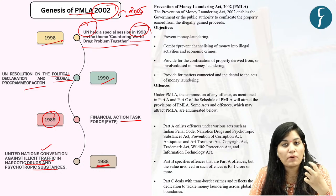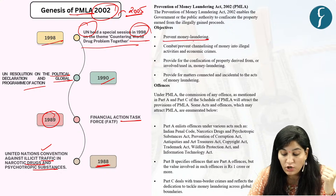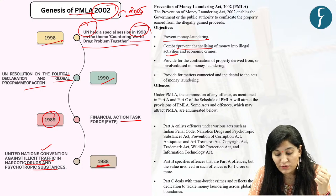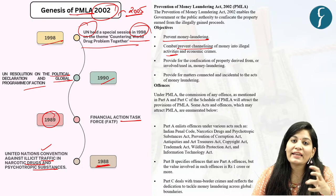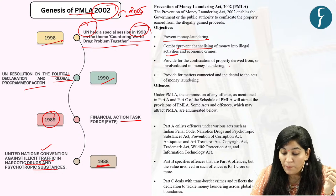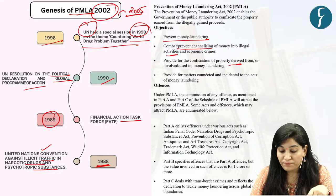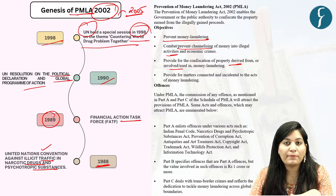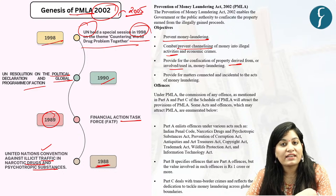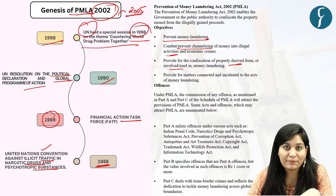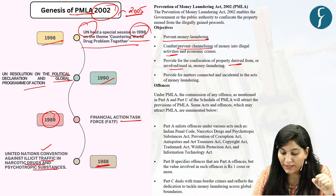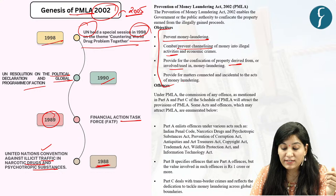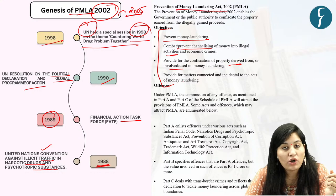The objectives of PMLA are: to prevent money laundering, to combat or prevent channelizing of money into illegal activities, and it enables the Indian government to confiscate property derived from or used in money laundering. That is why in the context, ED can attach political party assets — that is AAP assets. These are the different objectives of the Prevention of Money Laundering Act 2002.